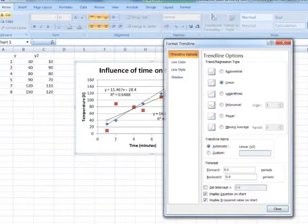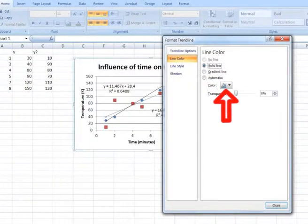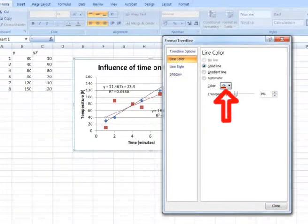A new pop-up with more options can now be seen. Select Line Color, select solid line and then choose a color that matches your data points.